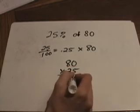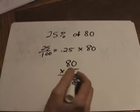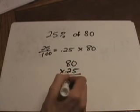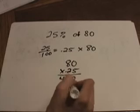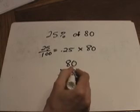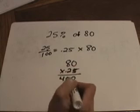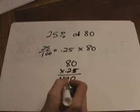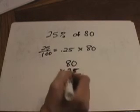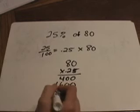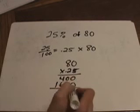0 times 5 is 0. 8 times 5 is 40. And now we need a placeholder. We're going to multiply by 80 times 0.2 next. 0 times 2 is 0. 8 times 2 is 16.